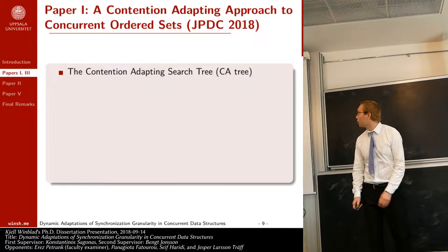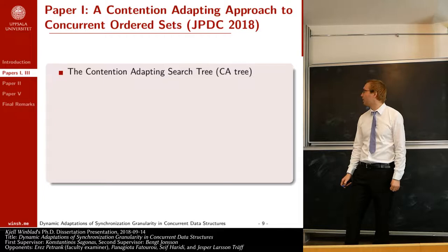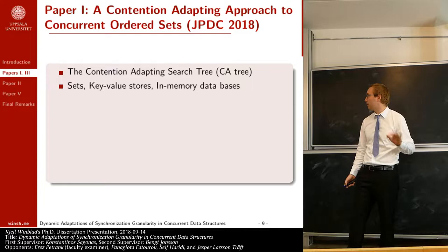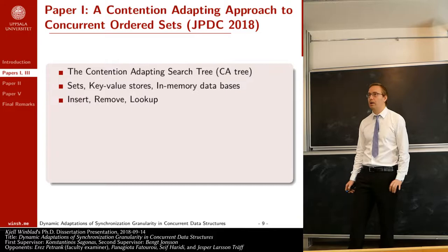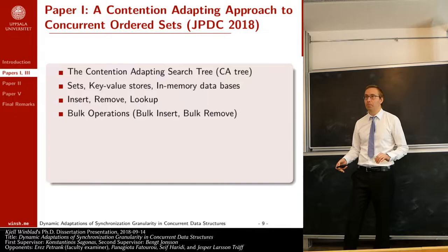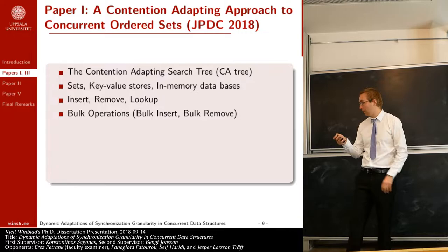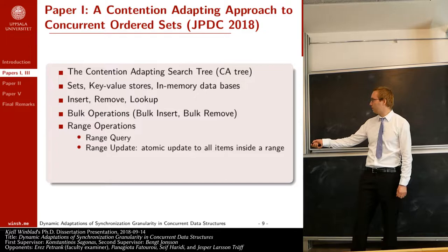Let's dive into paper one, titled 'A Contention Adapting Approach to Concurrent Ordered Sets.' I describe a data structure called the Contention Adapting Search Tree — the CA tree. This can be used to implement sets, key-value stores, and in-memory databases. It supports single item operations — insert, remove, and lookup — as well as bulk operations such as bulk insert, which atomically inserts a number of items into the data structure. It also supports range operations including range queries and range updates.